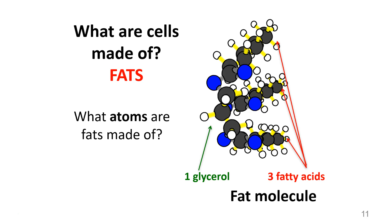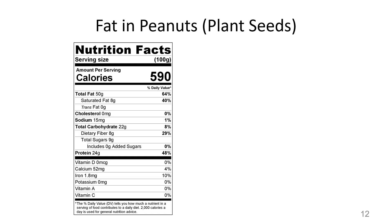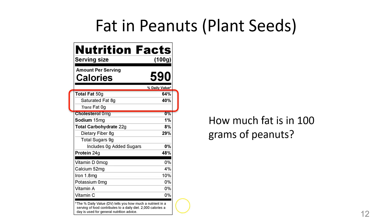Cells are also made of fats. You can see a fat molecule here — fat molecules are built up of smaller molecules: glycerol and fatty acids. Here we have a nutrition label for peanuts. Fifty grams out of 100 is fat, so 50% of peanut cells is fat.